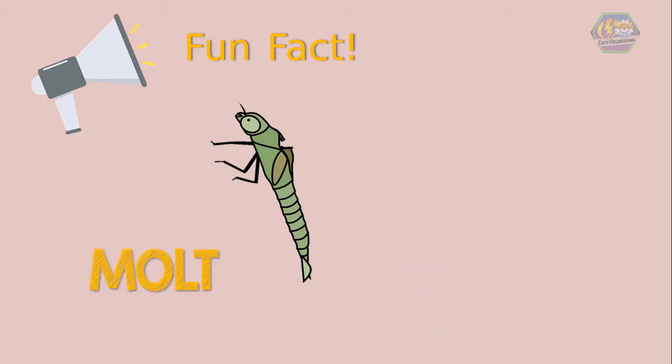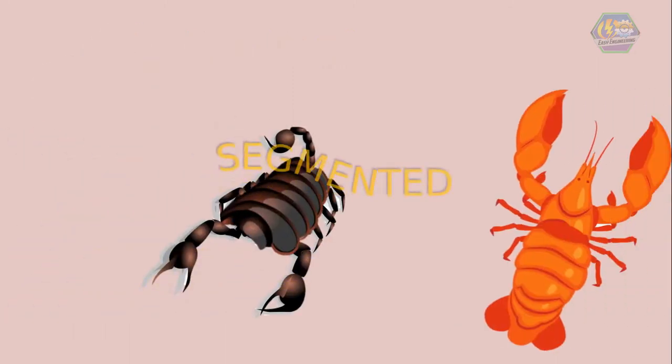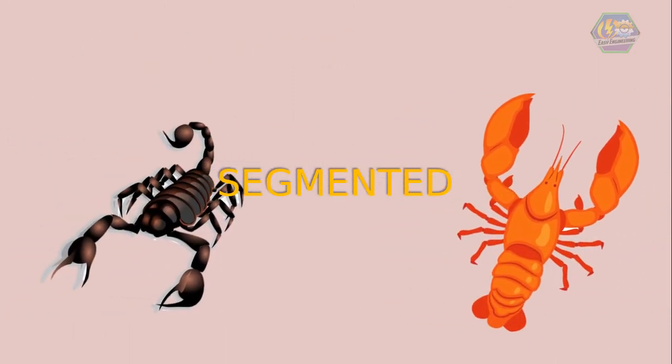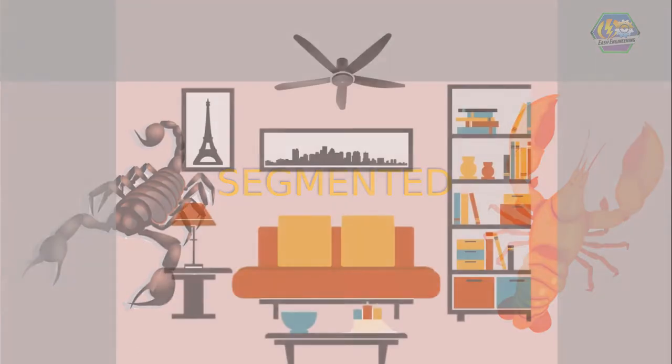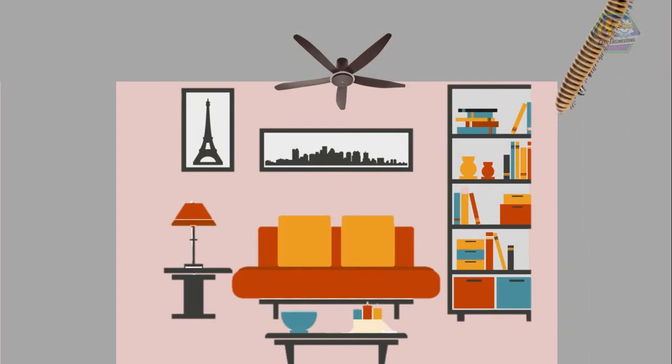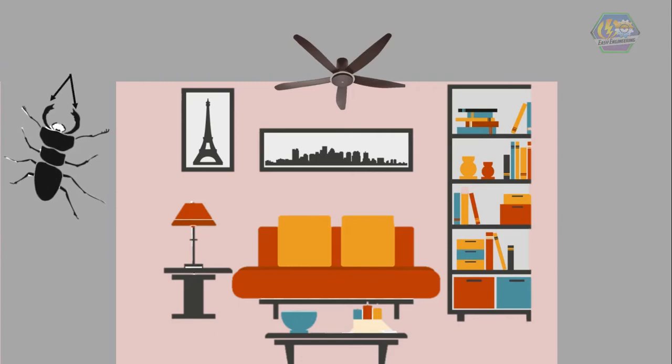Most arthropods are segmented, meaning that their bodies are divided into sections. The sections have pairs of jointed legs. Many arthropods can walk up walls and ceilings. They use small claws or some special gripping hair at the end of the legs to grip tiny bumps in the surface.